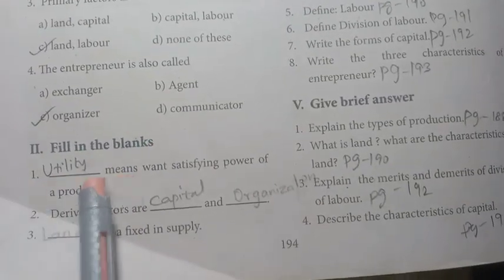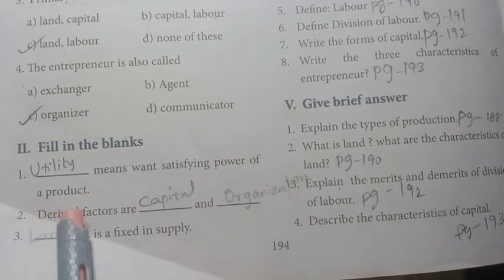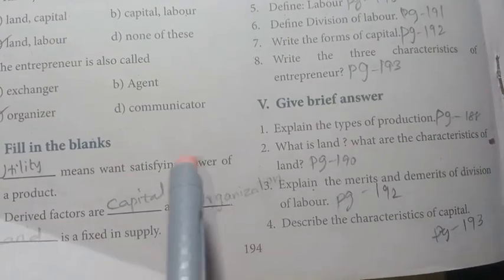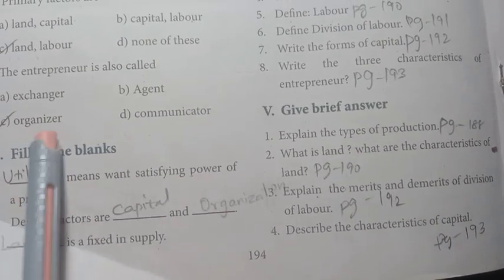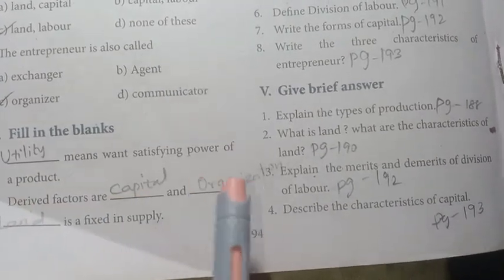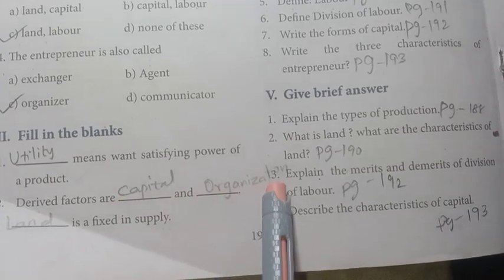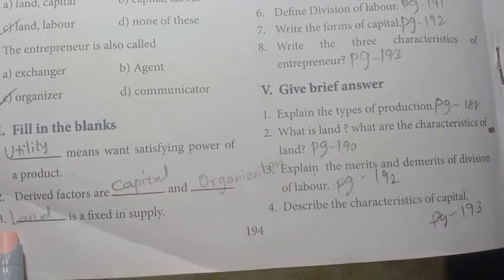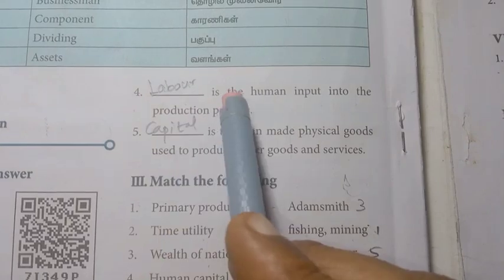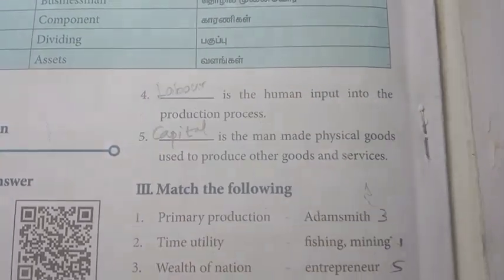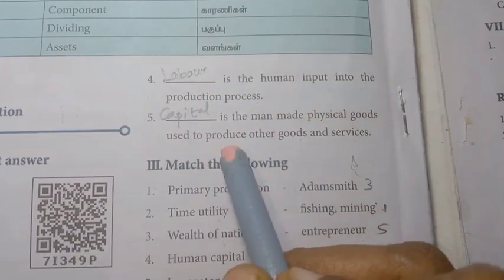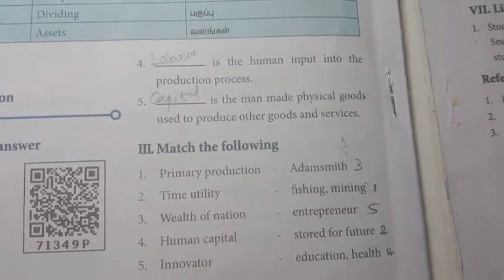Fill in the blanks. First one: the blank means the want-satisfying power of a product - that is utility. Derived factors are capital and organization. The blank is fixed in supply - that is land, as land's supply is fixed. The blank is the human input into the production process - that is labor. The blank is man-made physical goods used to produce other goods and services - that is capital.